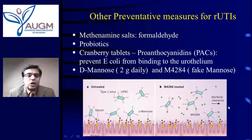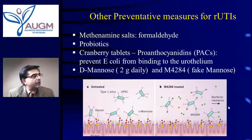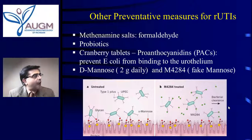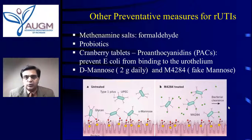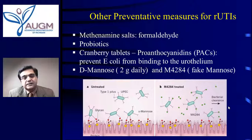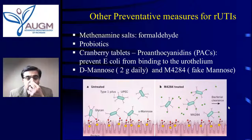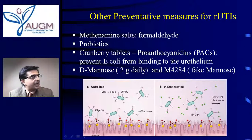Other things we can do include methenamine, which gets broken down to formaldehyde and acidifies the urine — the same mechanism as estrogen. Probiotics do the same thing. Cranberry tablets — the jury is out on this. Cranberry juice just gives you sugar. Cranberry tablets may have some role because they contain proanthocyanidins (PACs), which decrease the binding of E. coli to the bladder lining, so the bacteria can't attach and are flushed out when you urinate. However, it's not completely confirmed in clinical studies to be effective. If someone wants to take cranberry tablets, I won't say no.